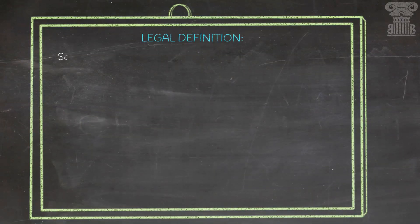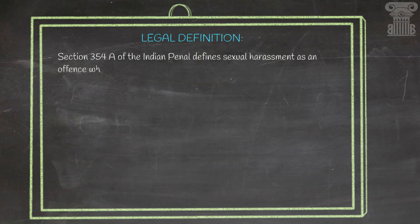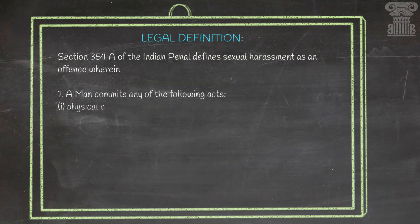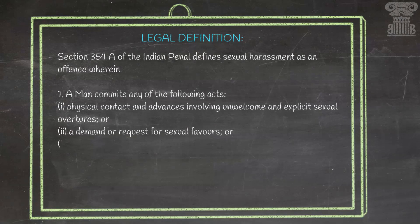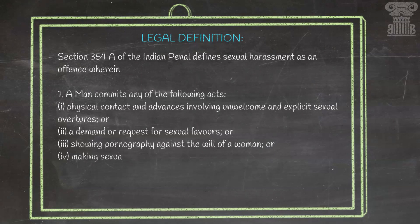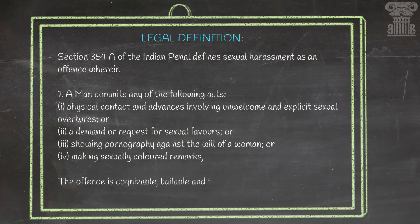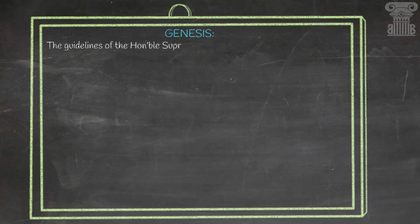Coming to the legal definition, sexual harassment is defined under Section 354A of the Indian Penal Code. It defines sexual harassment as an offense wherein a man commits any of the following acts: physical contact and advances involving unwelcome or explicit sexual overtures; a demand or request for sexual favors; showing pornography against the will of a woman; or making any sexually colored remarks. This offense is cognizable, bailable, and triable by any magistrate.